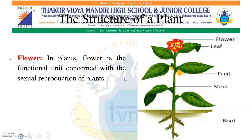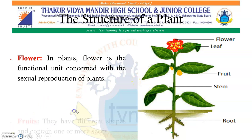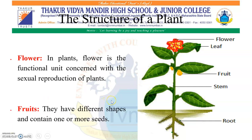Flower. This is the most attractive part of the plant. It is connected to the stem by a stalk which may be long or short. A flower has a typical color and shape. In plants, the flower is the functional unit concerned with the sexual reproduction of the plant, which you will learn about in your higher standards. Fruits have different shapes and contain one or more seeds.